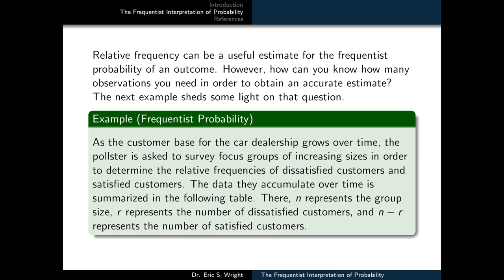As the customer base for the car dealership grows over time, the pollster is asked to survey focus groups of increasing sizes in order to determine the relative frequency of dissatisfied customers and satisfied customers. The data they accumulate over time is summarized in a table. There, n represents the group size, r represents the number of dissatisfied customers, and n minus r represents the number of satisfied customers.